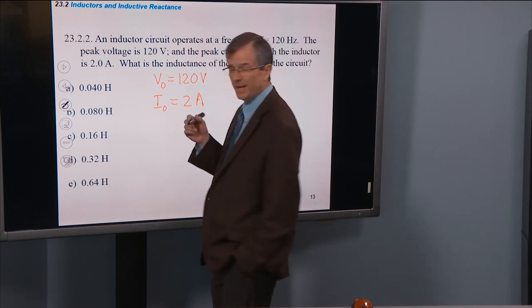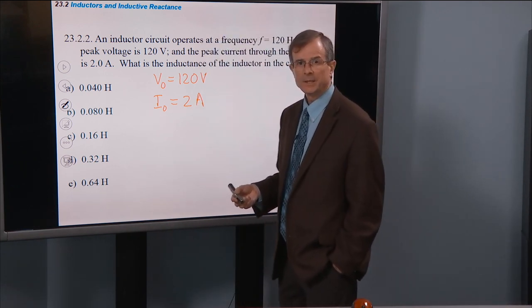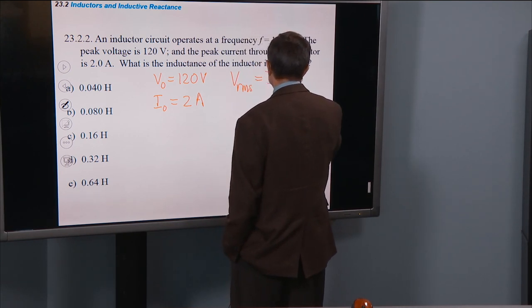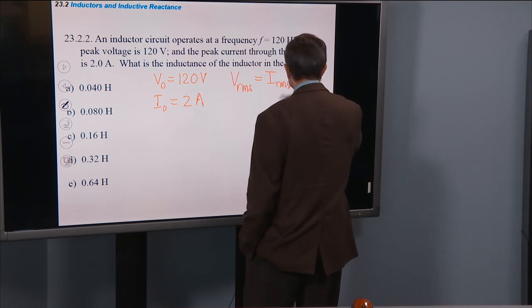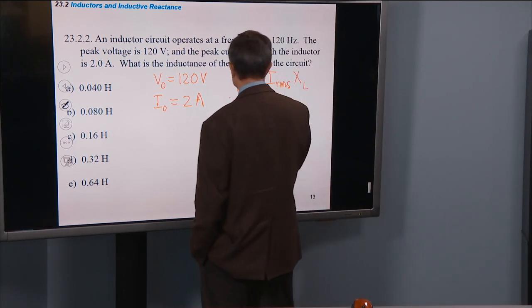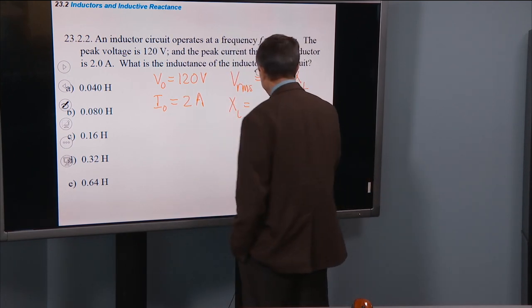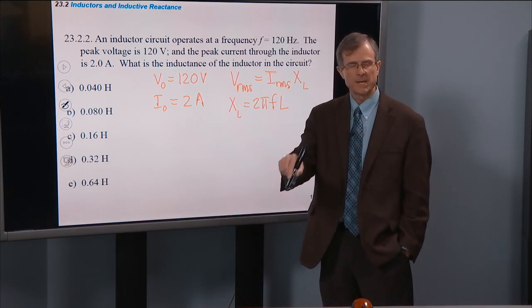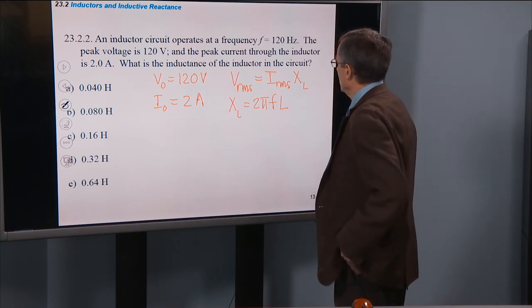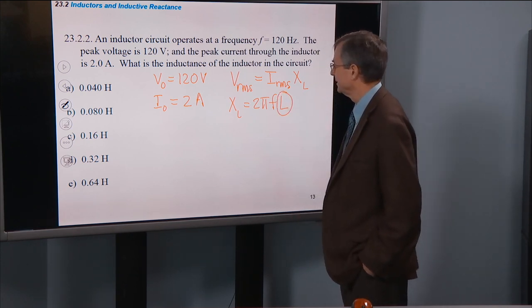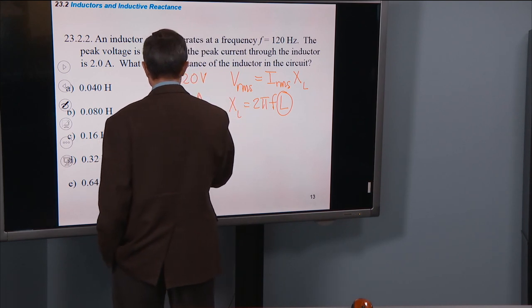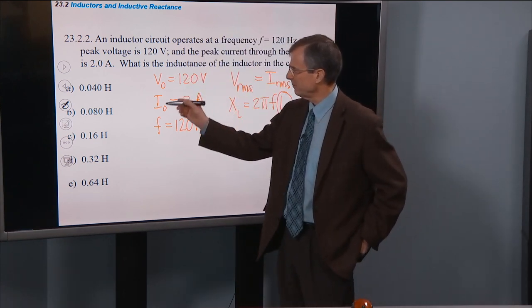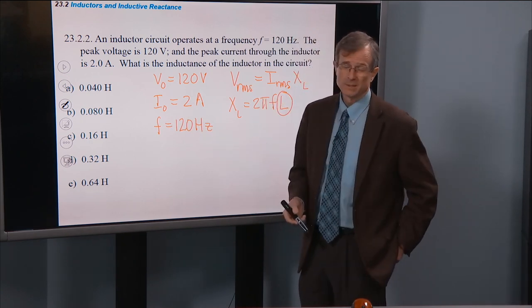And we want to know what the inductance is. We know how the RMS voltage and current are related to the inductive reactance. And what is that relationship? V_RMS equals I_RMS times the inductive reactance. And we know what the inductive reactance is. It is 2πfL, the inductance measured in Henrys. But the weird thing is that we're actually trying to find L here. We've got the frequency, it's 120 Hz. And the other weird thing about this problem is that we have the peak voltage and current, and we really need the RMS voltage and current.